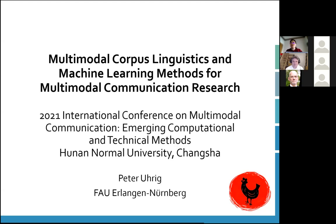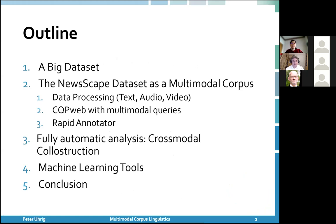I'm not the chair of English linguistics, by the way — I work at the chair. I'm an assistant professor only and much less renowned than some of the people we've seen here. Today I'd like to talk about multimodal corpus linguistics and how machine learning methods have helped us create better infrastructures and answer new questions in multimodal communication research. I'll start with a brief introduction of the Newscape dataset, then show what I did to turn it into a multimodal corpus with the tools we developed, then go on to fully automatic analysis with a case study on cross-modal construction, and show more machine learning tools we're currently applying.